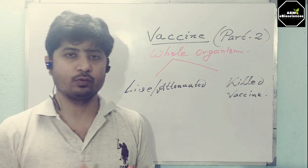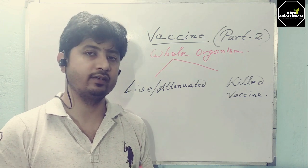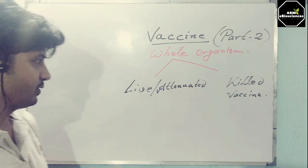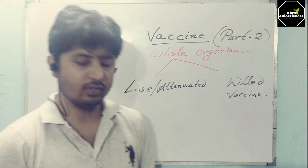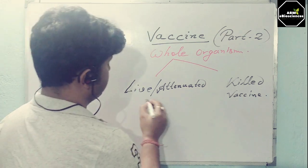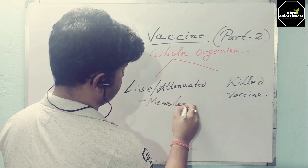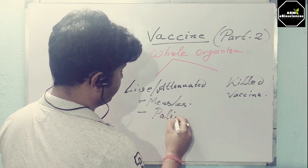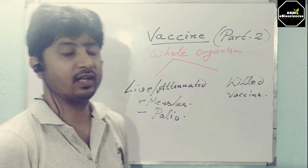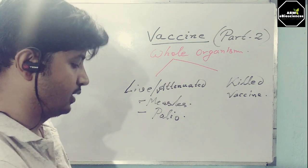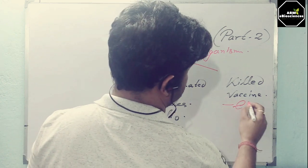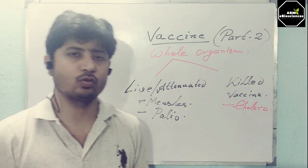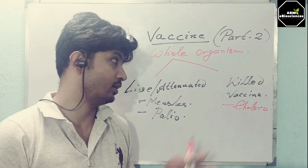These are two types of totally different vaccines which are developed by different means. Under these subclasses there are several vaccines — for example, under the live attenuated vaccines we can say polio, and if you say for killed vaccines, polio and several other examples are there. Now I'll be talking about the concept of live attenuated and killed vaccines.